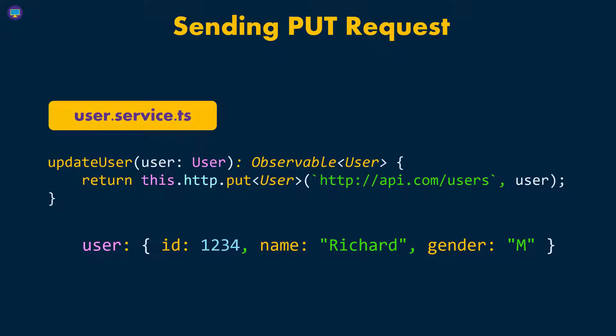But typically, whenever you send a PUT request, you have to send the entire data — all the properties on that data. That's the main difference with PATCH, because with PATCH you don't have to send all the properties. You might just have to send the ID and whatever field or value you want to change, and everything else will stay the same. But with PUT, we have to send the entire data. So let's go ahead and give this a try.